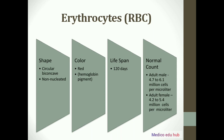We will see the properties of erythrocytes. Number one is shape — RBCs are biconcave and non-nucleated. Next is color: RBCs are red because they contain hemoglobin pigment, which is very crucial for carrying oxygen through our bloodstream. Next is lifespan of erythrocytes, which is 120 days. The normal count of RBC in adult males is 4.7 to 6.1 million cells per microliter, and for adult females it is 4.2 to 5.4 million cells per microliter.